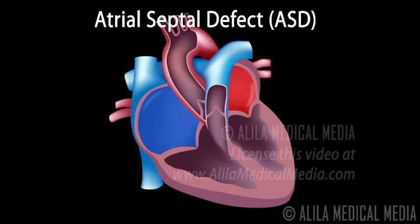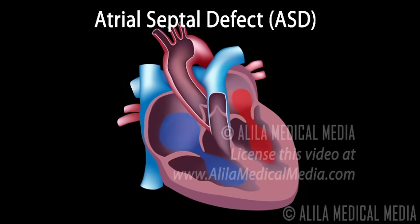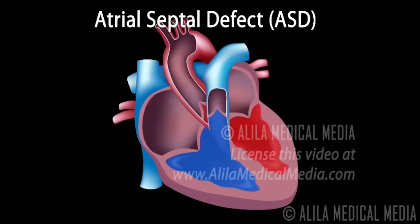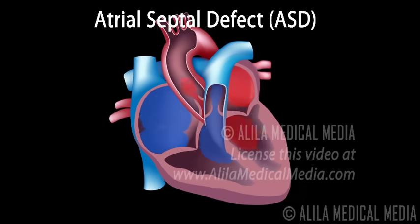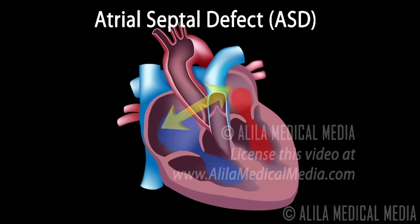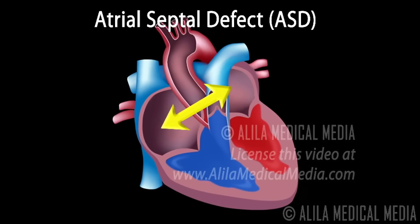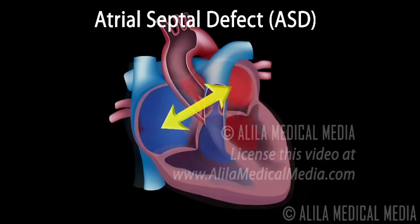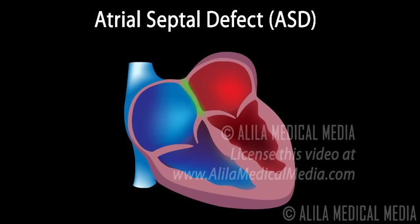Atrial septal defect, or ASD, is a congenital heart defect in which blood flows abnormally between the two atria of the heart. Normally the atria are separated by a wall called the interatrial septum. In ASD patients, this septum is defective, allowing blood flow between the two chambers.